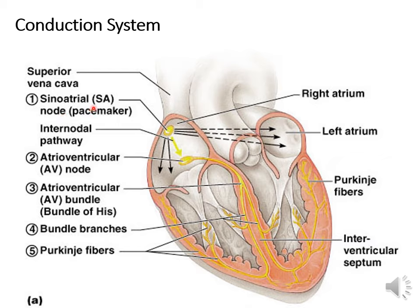That's the reason why normally the SA node can override all these other tissues and act as the primary pacemaker of the heart. From the SA node, the impulses then spread to the AV node, or the atrioventricular node, through the internodal pathway, and also to the left atrium through the interatrial pathway. From the AV node, the impulses are passed through the bundle of His, the left and right bundle branches, and the Purkinje fibers, spreading to the other muscle cells, thereby helping the heart contract and relax in a rhythmic manner.